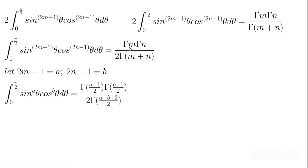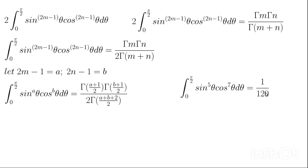As a quick example, if a=5 and b=7, we integrate sin⁵θ·cos⁷θ dθ from 0 to π/2. We compute: m=(5+1)/2=3, so Γ(3); n=(7+1)/2=4, so Γ(4). Then we have Γ(3)·Γ(4) / (2·Γ(7)) = 2!·3! / (2·6!) = 2·6/(2·720) = 1/120.